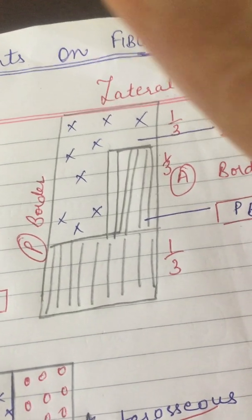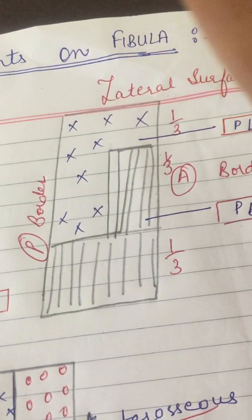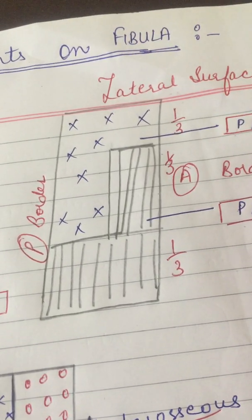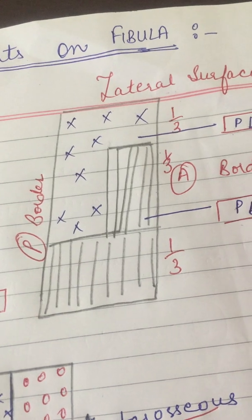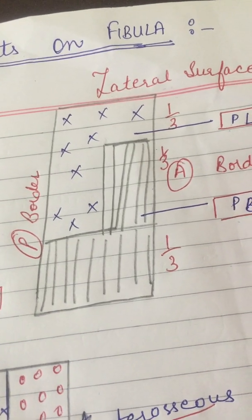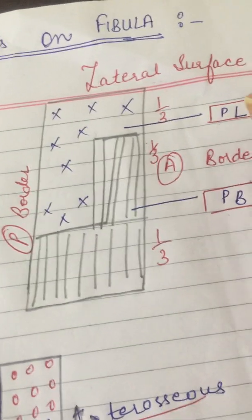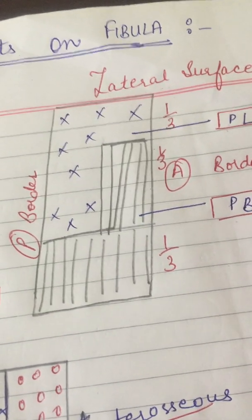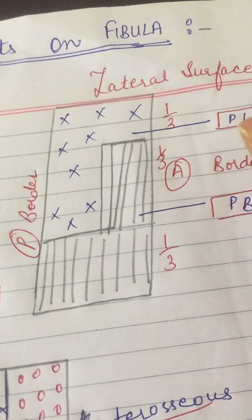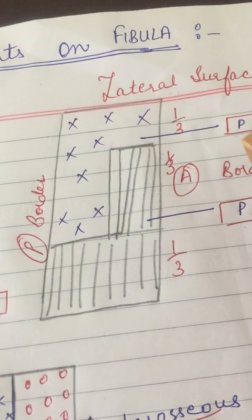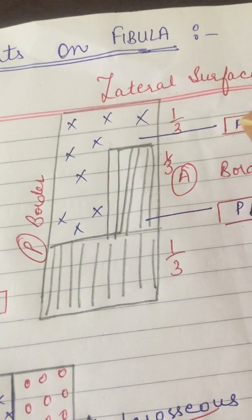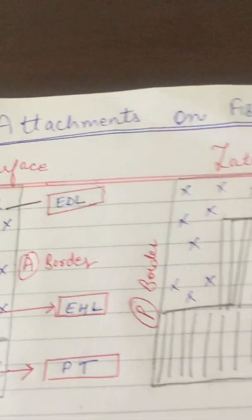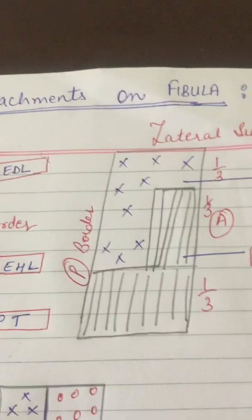One more important thing regarding this bone is that the fibula violates the law of ossification, because the secondary centre which appears first — in the lower end — does not fuse last. So this is all about the fibula. Thank you very much, students.